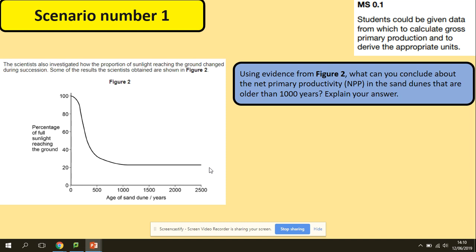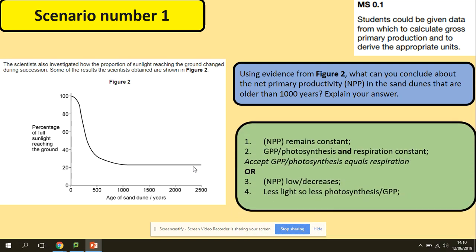Using the evidence from figure 2, what can you conclude about the net primary productivity in the sand dunes that are older than 1,000 years? So older than 1,000 years, you're looking at the graph and you are here, so it levels off. What we can then conclude using the equation is that the net primary productivity will remain constant. Gross primary productivity must be constant, same as the respiration.